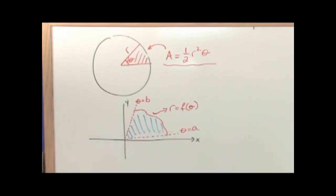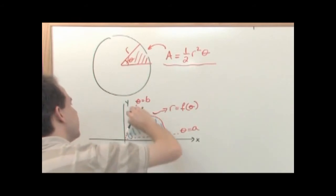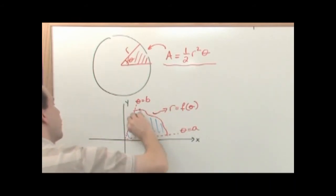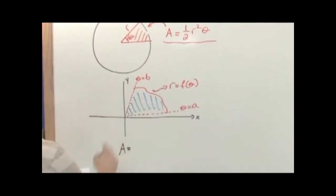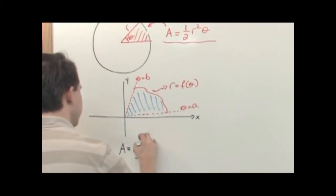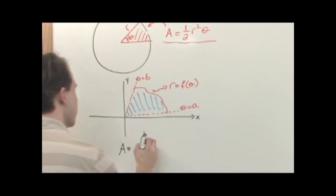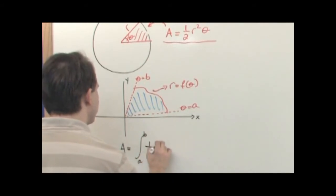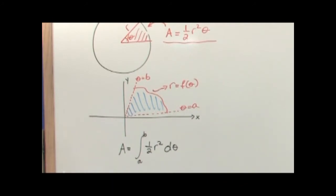I'm going to write this down without proof and then talk about it. The area of this shaded region is going to be the integral from a to b — which are my endpoints, and those are angles — of one-half r squared d theta. Make sure you understand this: one-half r squared d theta.